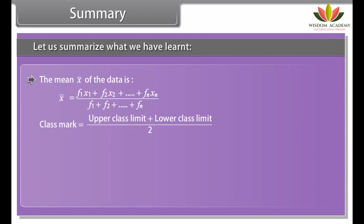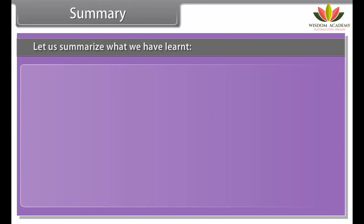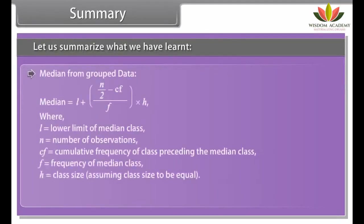Summary: The mean x-bar of the data equals (f1·x1 + f2·x2 + ... + fn·xn) divided by (f1 + f2 + ... + fn). Class mark equals (upper class limit plus lower class limit) divided by 2. The formula for mean using assumed mean method is: assumed mean plus summation of fi·di divided by summation of fi, where di equals xi minus a (the assumed mean). The formula for mean using step deviation method is: assumed mean plus h multiplied by summation of fi·ui divided by summation of fi.